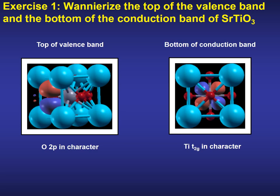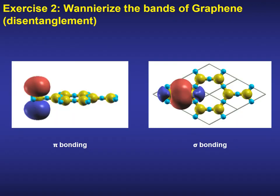You will learn in the exercises how these matrices are generated. Once they are available, we will Wannierize, for instance, the top of the valence band and the bottom of the conduction band of an insulator like strontium titanate. These maximally localized Wannier functions would display, respectively, a marked oxygen 2p and titanium T2g character. As a second exercise, we are going to Wannierize the band structure of a metal — in this case graphene. The goal is to plot Wannier functions coming from the pi and the sigma bondings, as shown in this figure here.